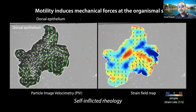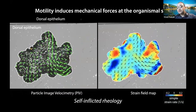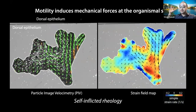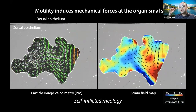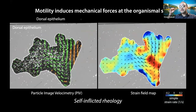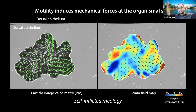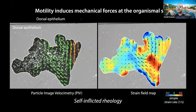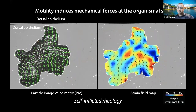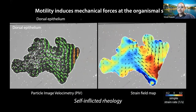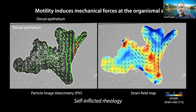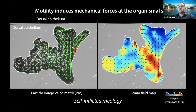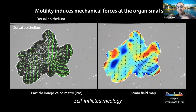Once you have the velocity vectors, you can compute the internal strain. The colors are all fluctuating — the animal is stretching itself all the time and imposing strains inside it. It's like doing yoga, so we call it self-inflicted rheology. This animal is imposing strains inside itself.